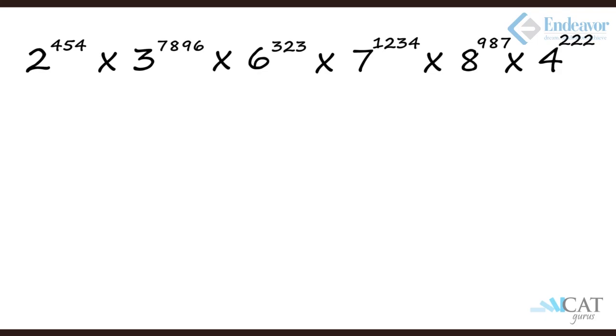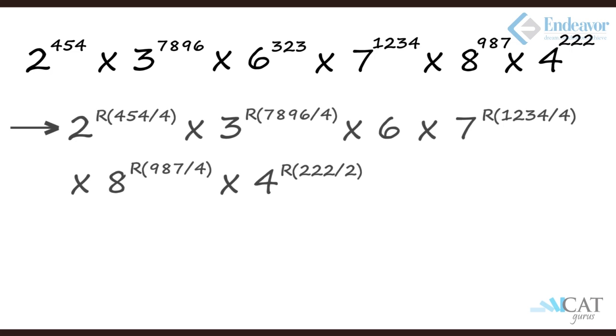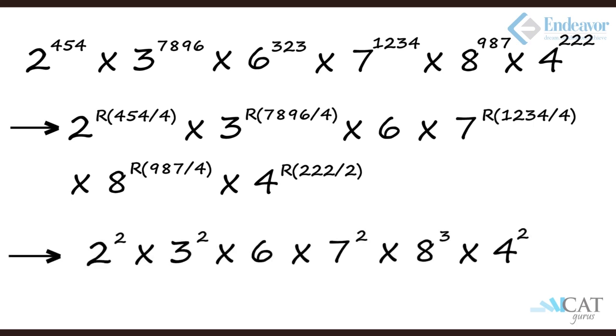Let's put it back into the original equation that we had: 2 to the power 454 into 3 to the power 7896 into 6 to the power 323 and so on. So 2 has a cyclicity of 4, so we divide 454 by 4. 3 again has a cyclicity of 4. 6 does not have cyclicity, it is constant, so let's keep it 6 simply. 7 has a cyclicity of 4, 8 also has a cyclicity of 4, and 4 has a cyclicity of 2. In case of 4, what do we do? It's either even or odd. So let's go back: 2 square into 3 square into 6 into 7 square into 8 cube and it's 4 to the power 2.